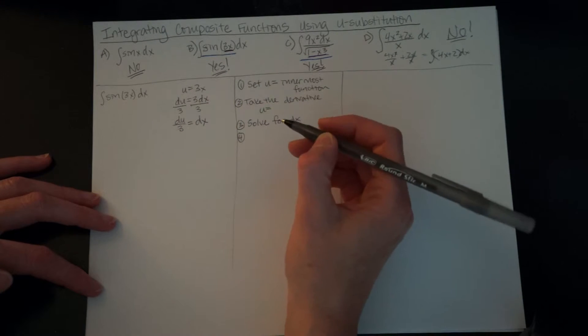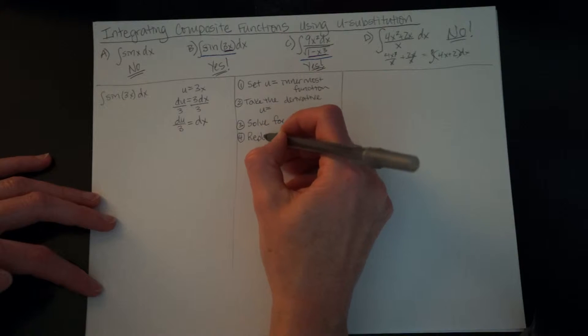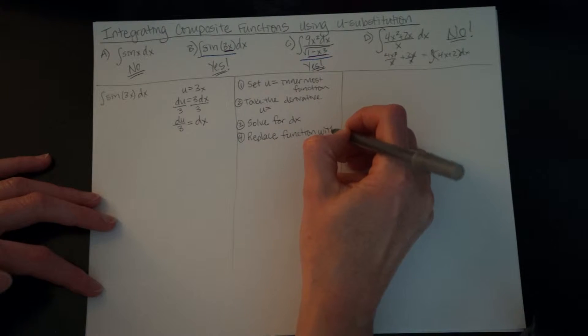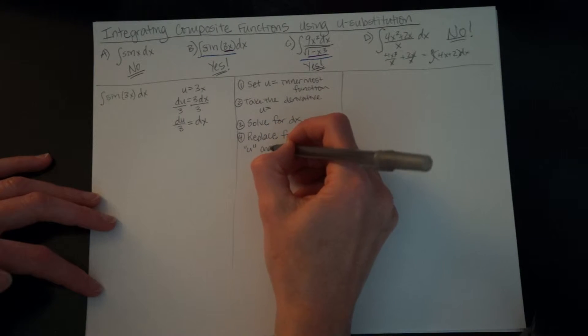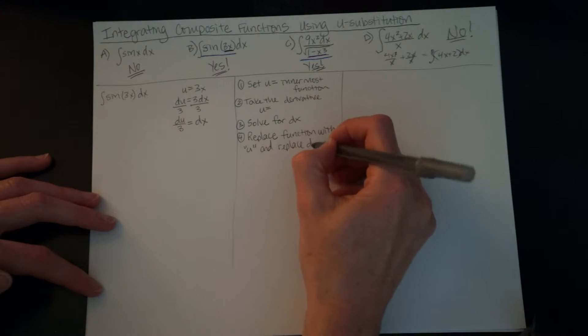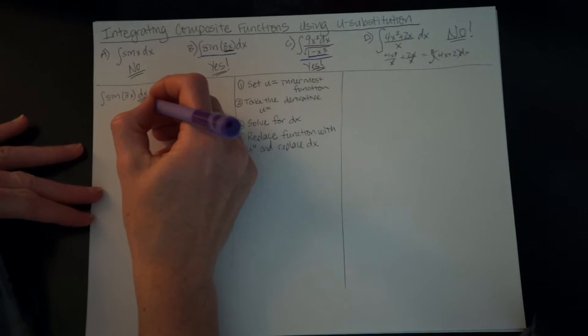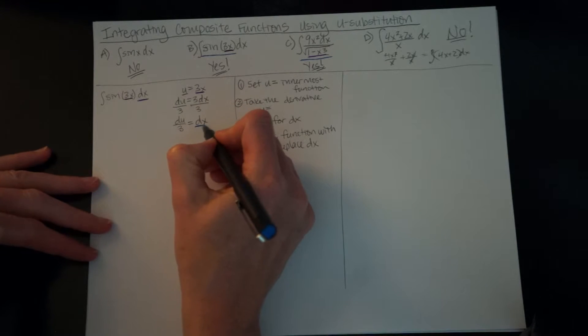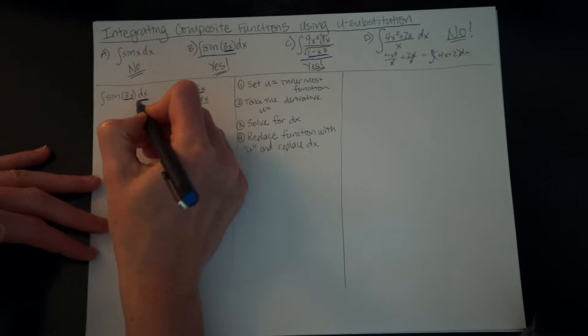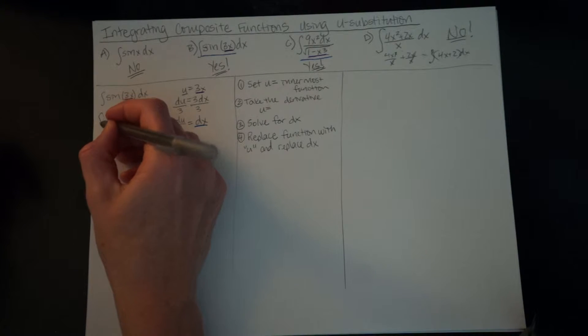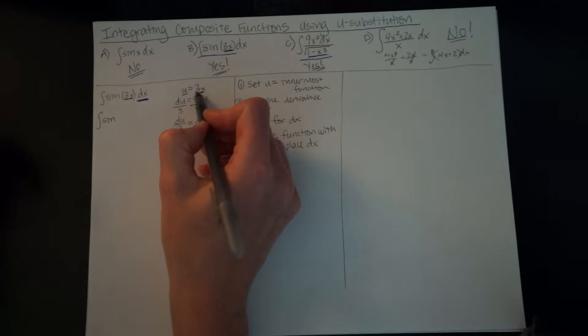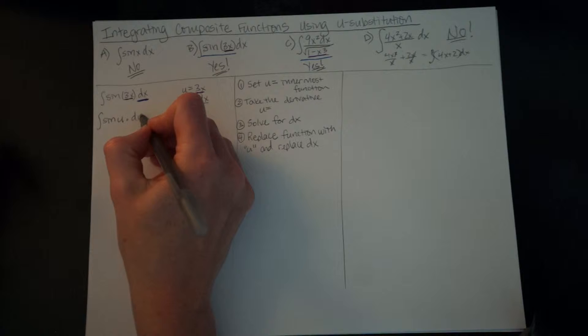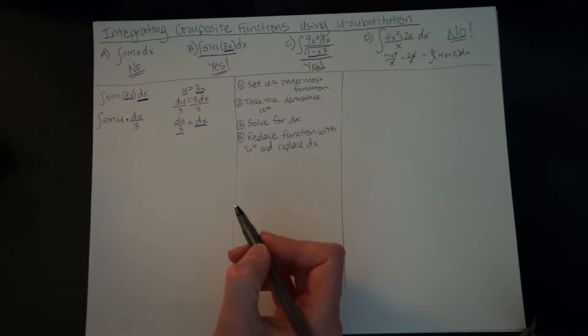And then the next step, this is probably one of the most important ones, is replacing. We are going to replace our function with u and replace our dx. Okay, so here's our dx and here's our function. Our 3x is equal to our u and our dx is equal to this right here. Let's put this in blue here. Maybe that'll help you a little bit see that. So we now have the integral of sine of instead of 3x, we're putting a u. And instead of dx, we're putting du over 3. This is just a little multiplication sign to show you those are being multiplied.